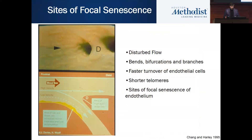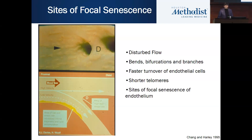Interesting work by Chang and Harley showed that endothelial cells at bends, branches, and bifurcations are aging faster, presumably under disturbed flow conditions. It is known that atheroma tends to form at these sites. Myron Sevolsky showed years ago that at these sites the vessel is atheroprone — already expressing adhesion molecules and chemokines — and that's where atheroma tends to aggregate.